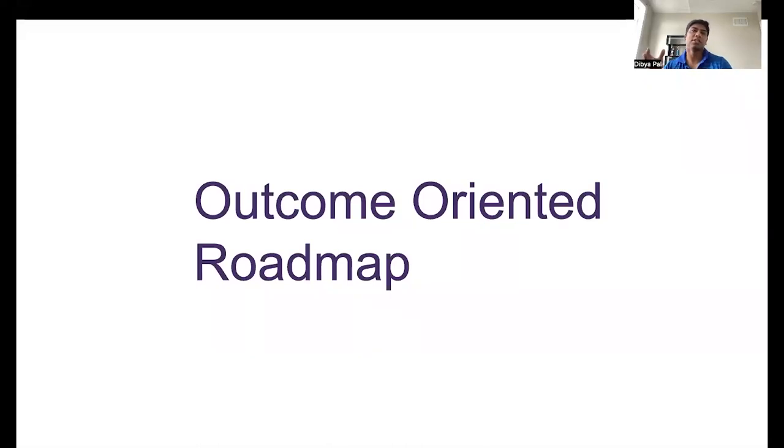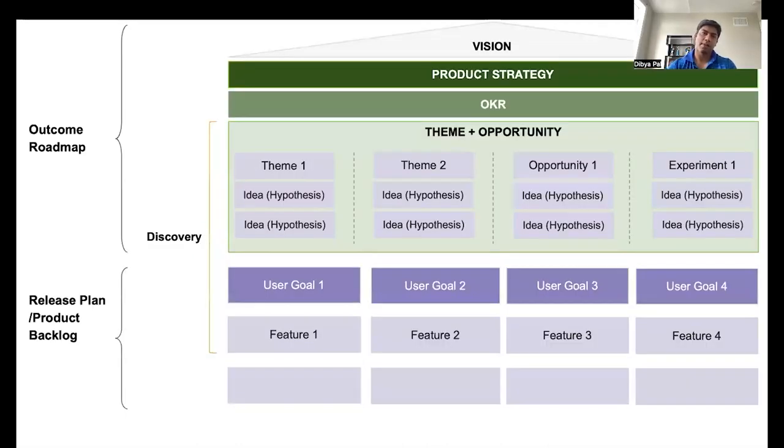The answer to this is outcome-oriented roadmap. So what does the outcome-oriented roadmap look like? Outcome-oriented roadmaps actually focus on value rather than features or dates. These roadmaps have four important components: vision, product strategy, goals or the OKRs and themes. In this roadmap, it's important to ensure that we have a clear lineage and alignment between the vision, strategy, OKRs and themes.